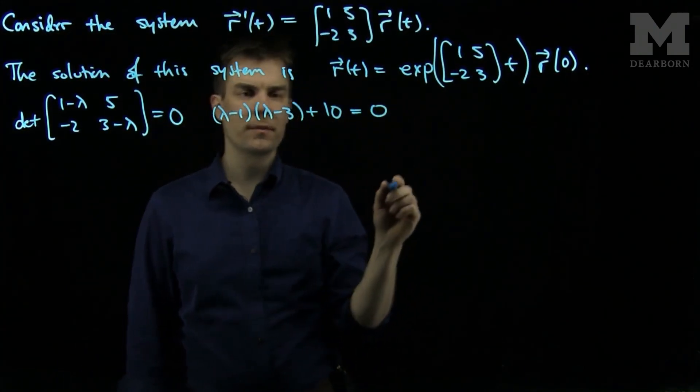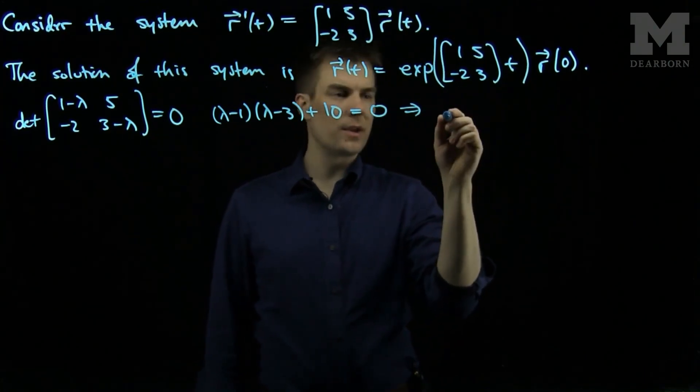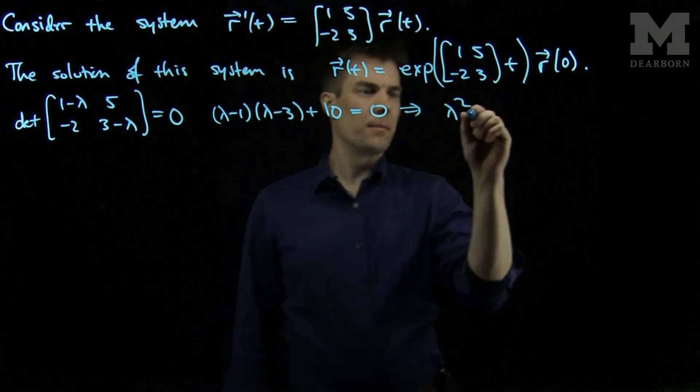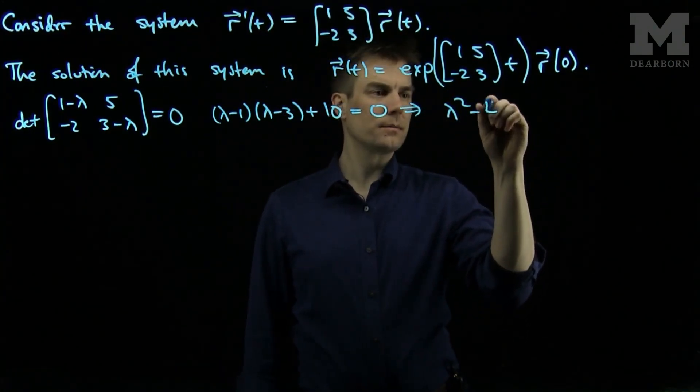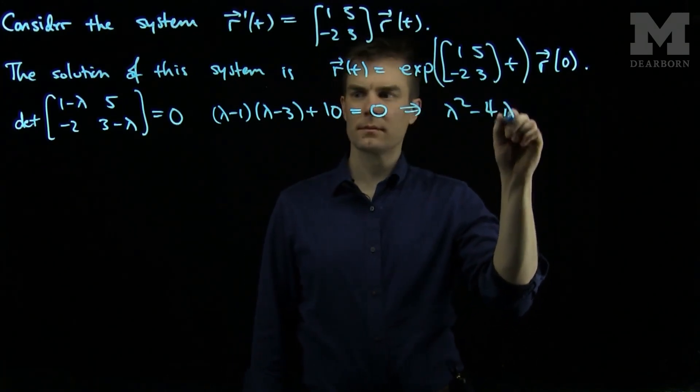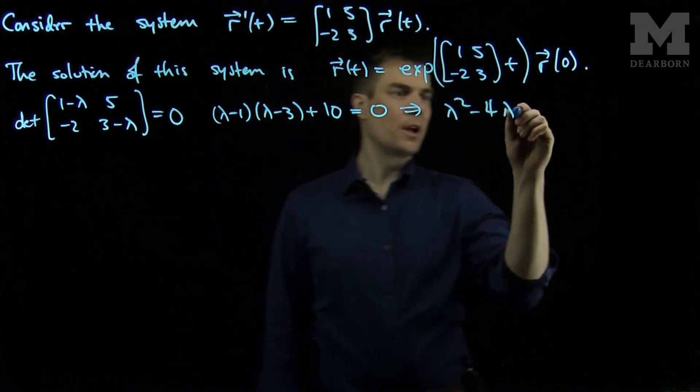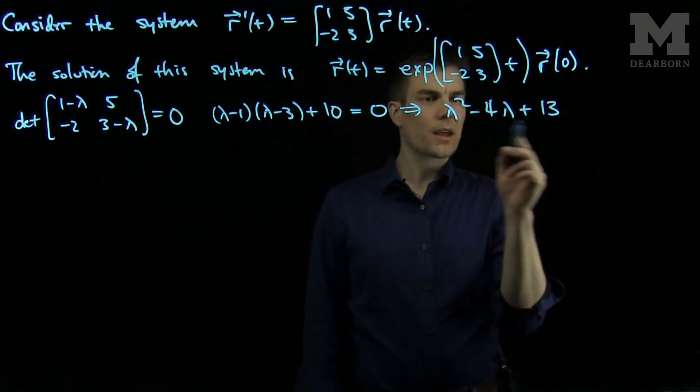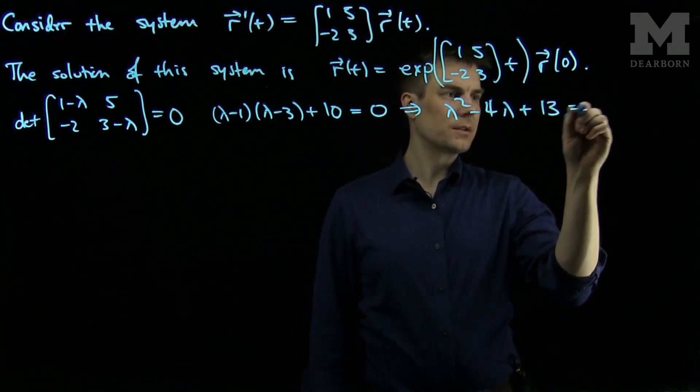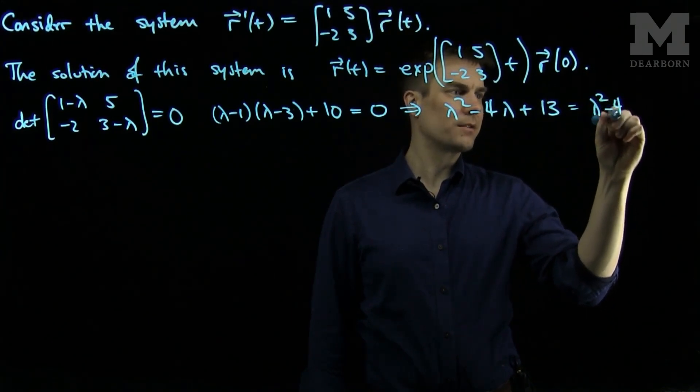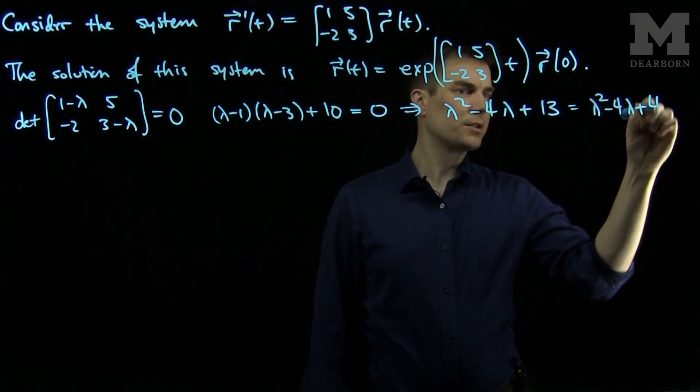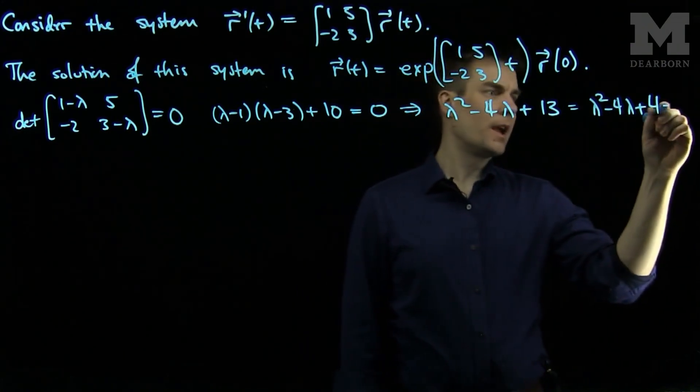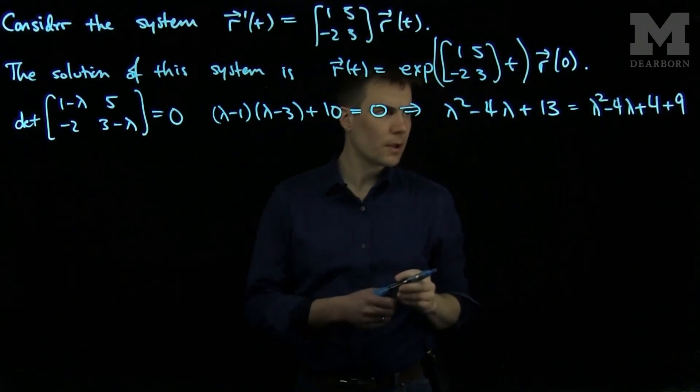If we factor this out, we get λ² - 4λ plus 13. Now we can complete the square, so we write this as λ² - 4λ + 4, and then there will be a 9 left over. This term is a perfect square.